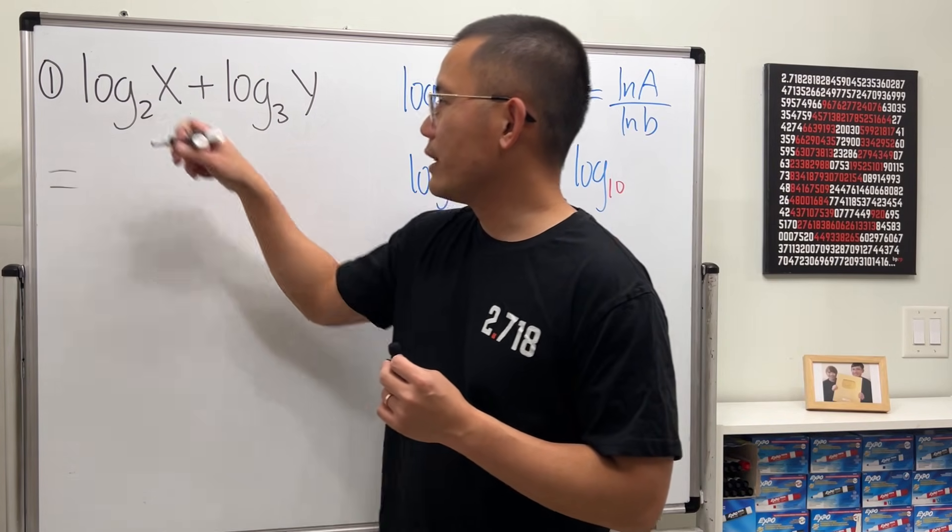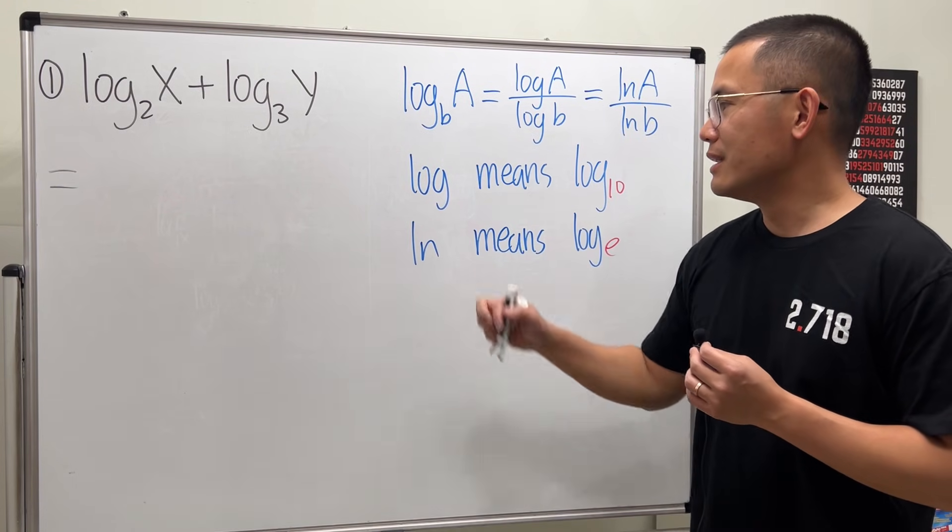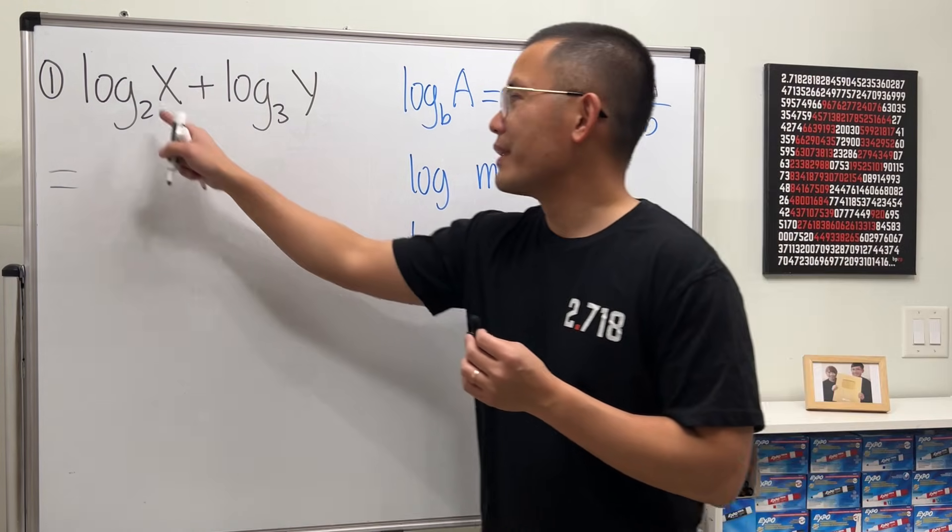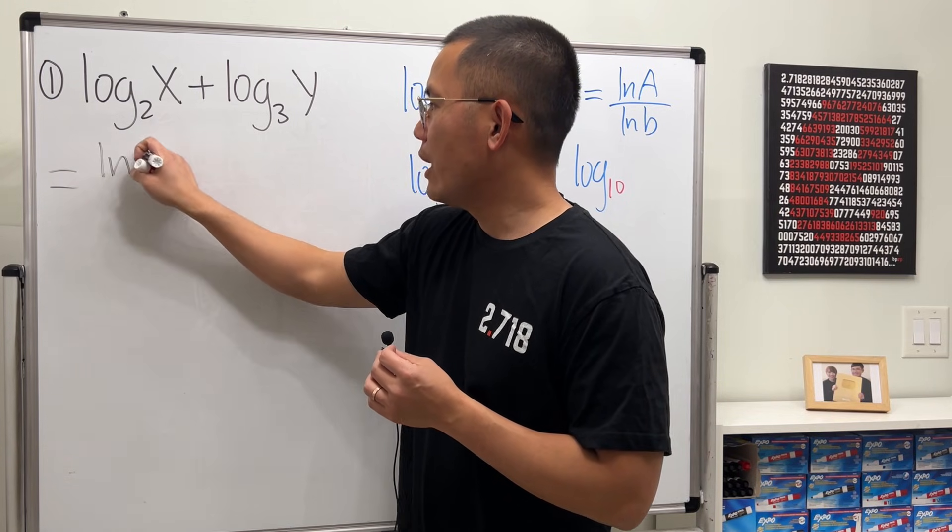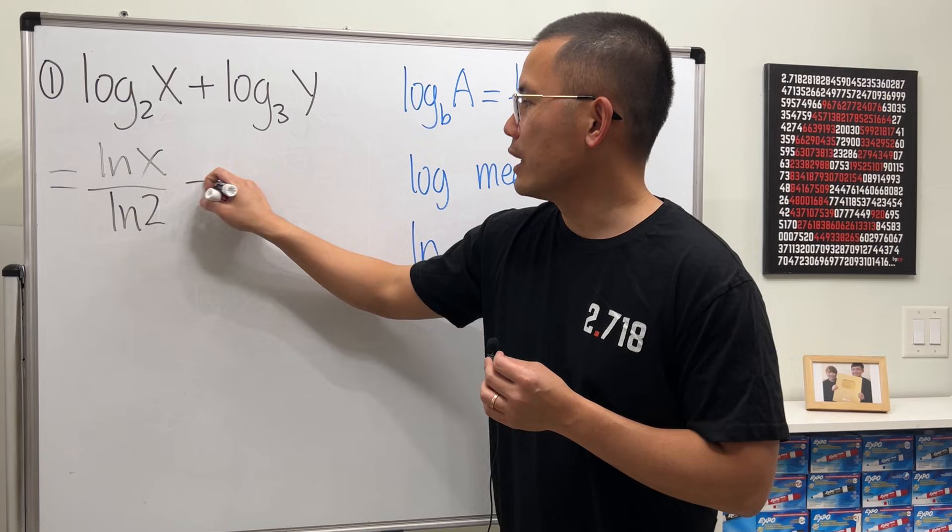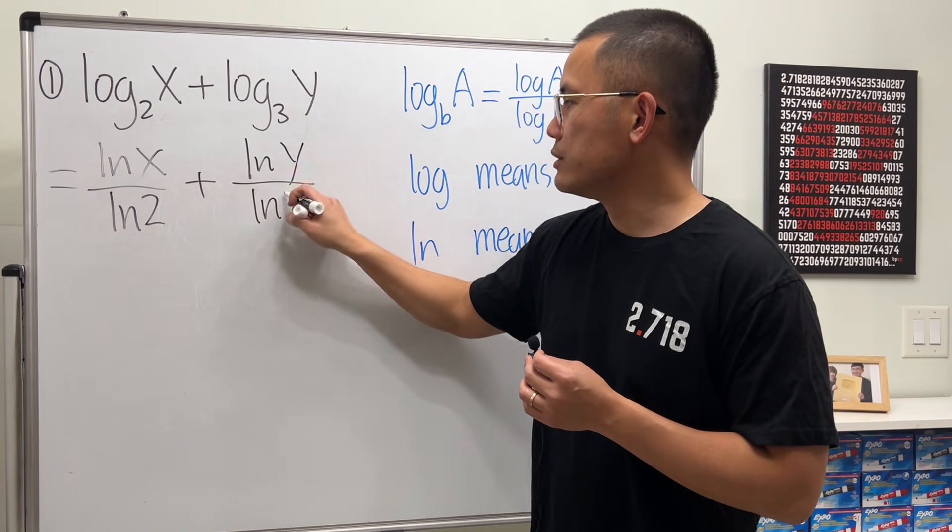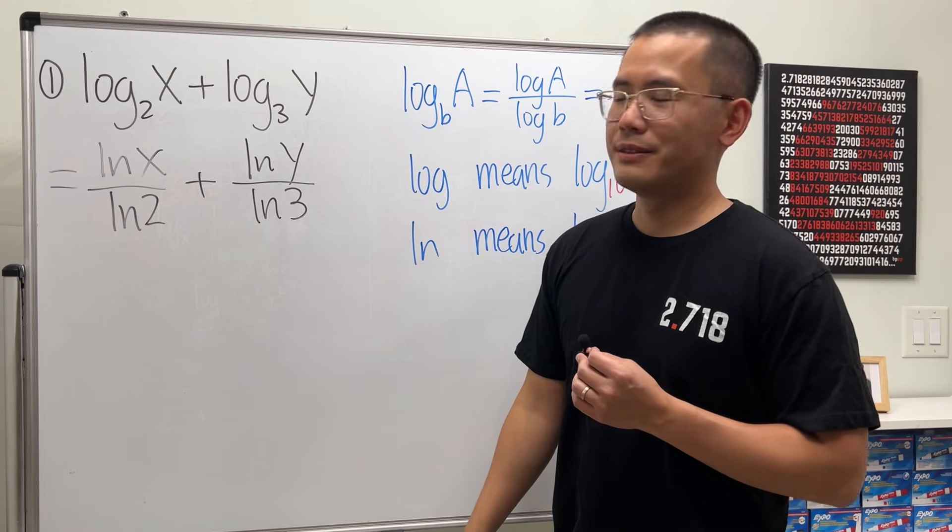Let me come back here. For the first one, let's just do it with ln, because once you get to pre-calculus, ln is more common than log. So this is the same as ln x over ln 2, and then we can just add ln y over ln 3. Now what though?